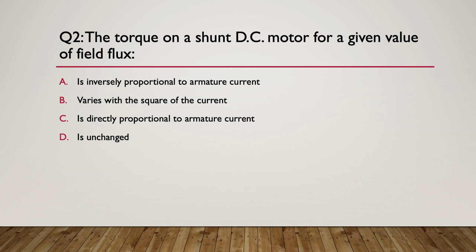Question two: the torque on a DC shunt motor for a given value of field flux will do what? A: is inversely proportional to the armature current. B: varies with the square of the current. C: is directly proportional to the armature current. D: is unchanged. Pause here. Here's your hint — how is torque produced between the two fields? Think about how the two fields interact to produce torque.